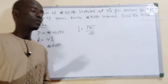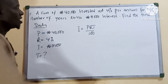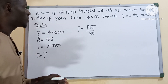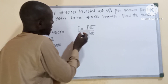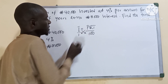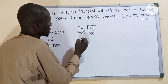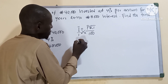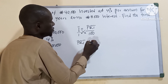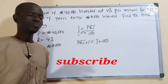When we have the formula, we are going to cross multiply. I hope it's very simple. We have P times R times T times 1 equals I times 100. Very simple.